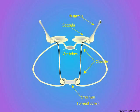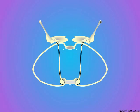Like birds, bat flight muscles attach directly to the wing bones. However, whereas birds use only one muscle each for the upstroke and downstroke, bats use four muscles each.